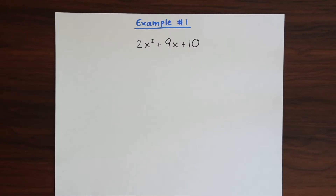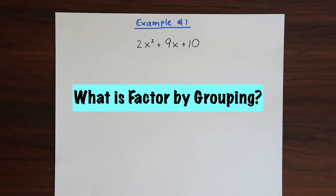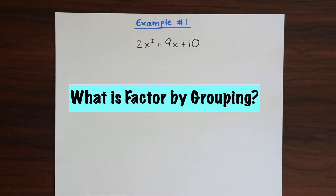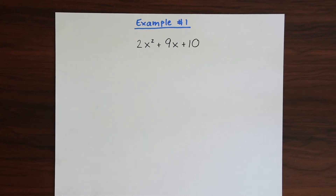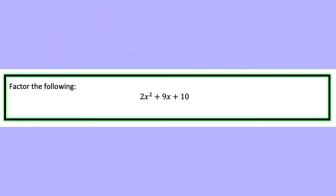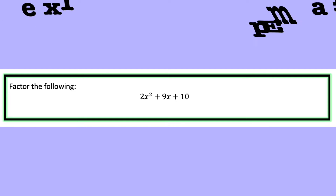So first, just to go over what factor by grouping is — it is a factoring method that groups common factors of an algebraic expression together. And in doing so we can factor and then find the x values. It looks like it's magic, so I hope you like it. Let's dive right into examples so you can see it in action.